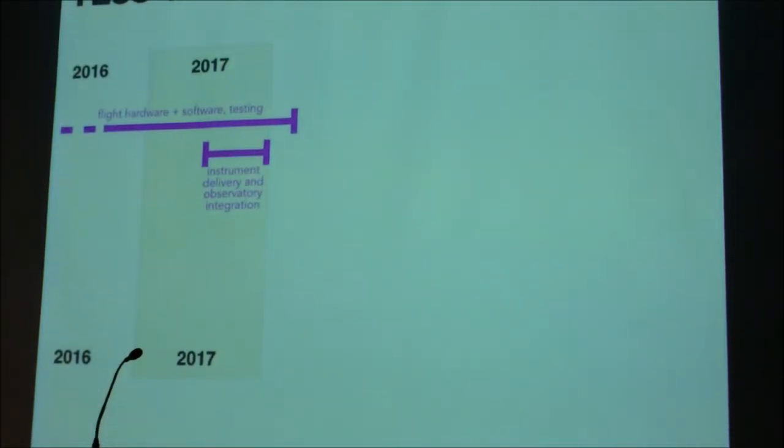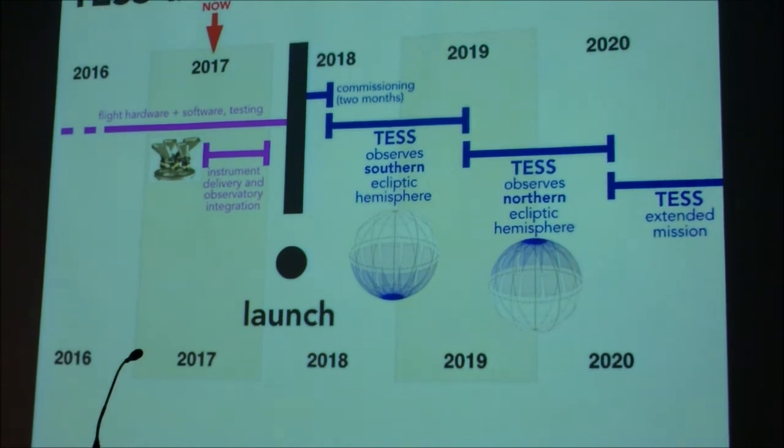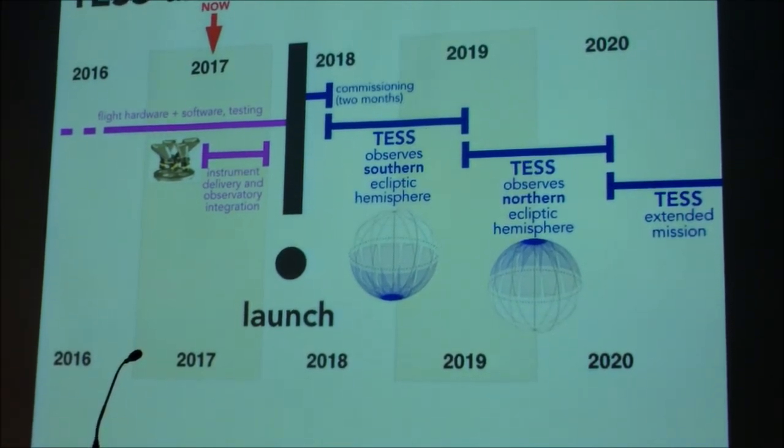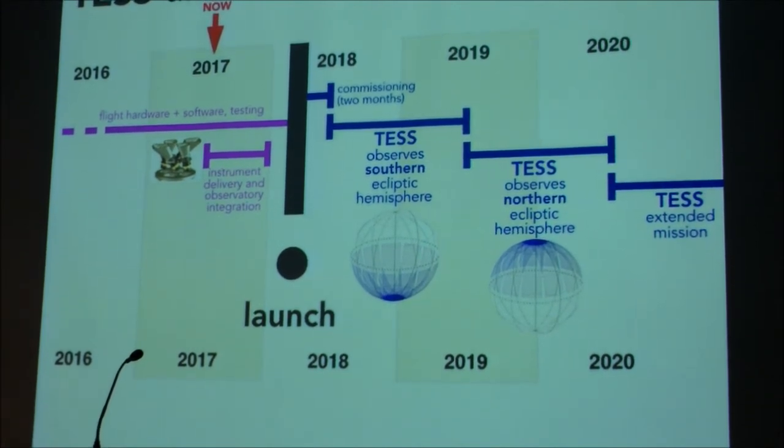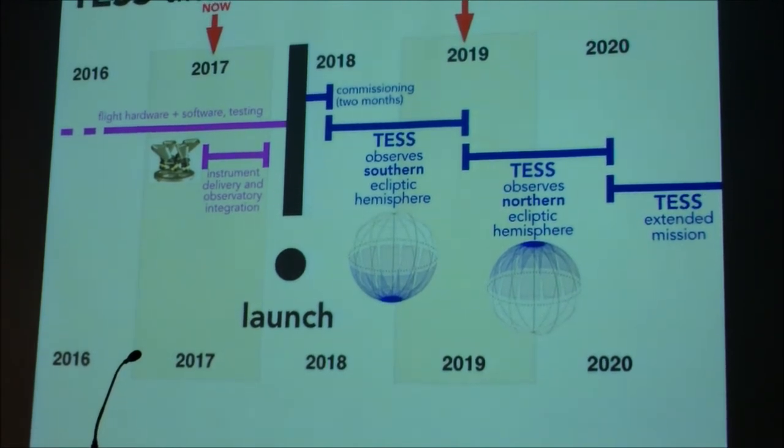The timeline for the mission is what I'm showing here. This is where we are right now. And this indicates that the cameras are being delivered. Half of them were delivered this week. And the other two are coming next week. And then the launch is here. And then we observe the southern ecliptic hemisphere starting in March. And then we continue on in the second year to do the northern ecliptic hemisphere. And hopefully we'll get the go ahead for an extended mission in the 2019 timeframe.